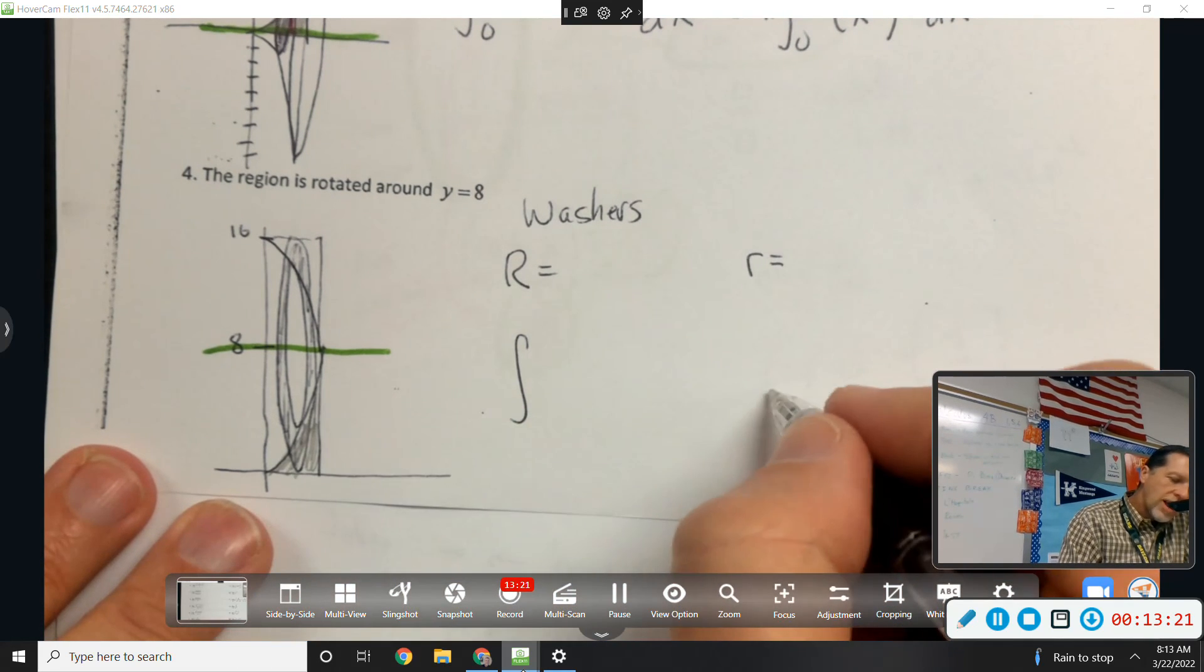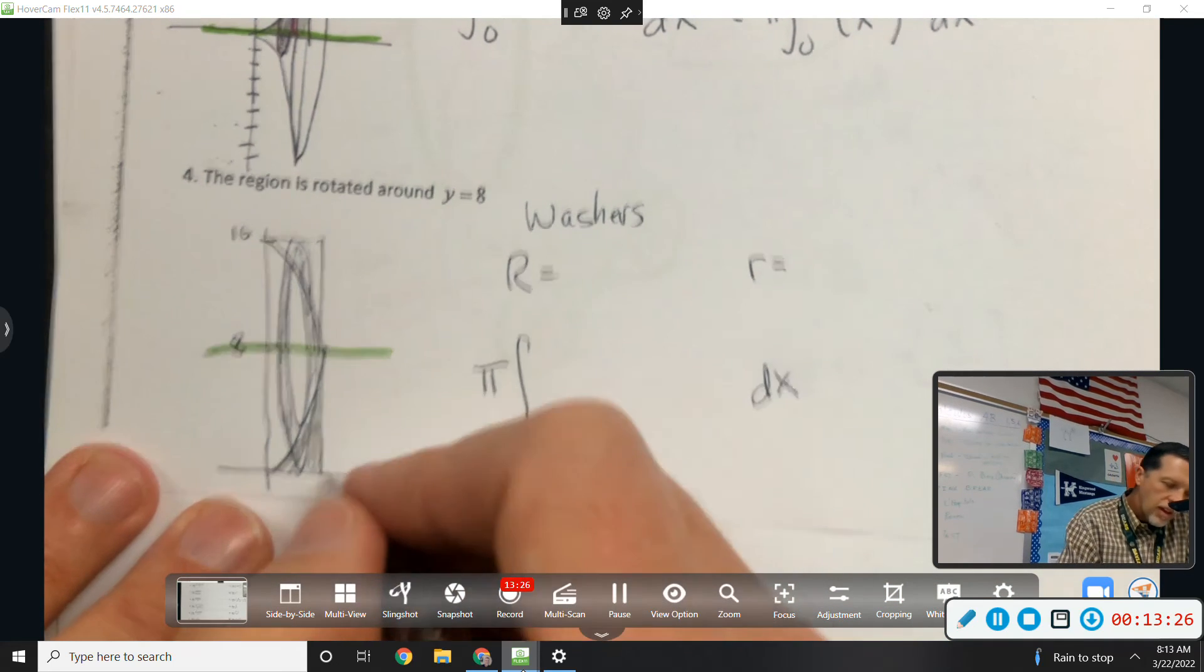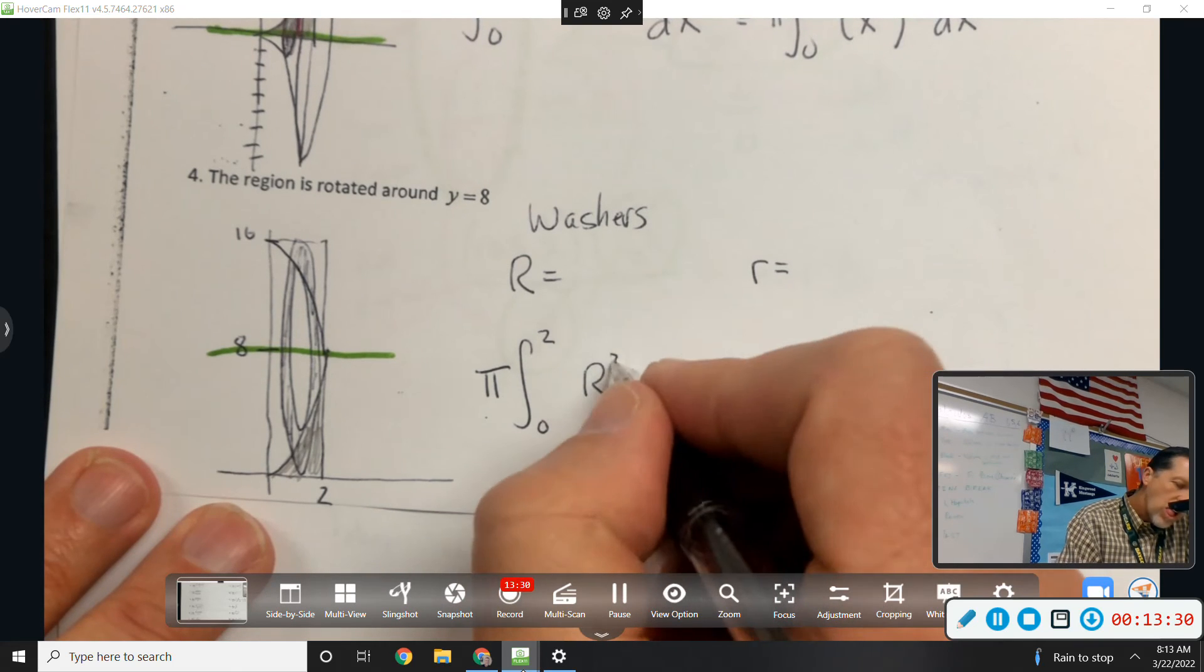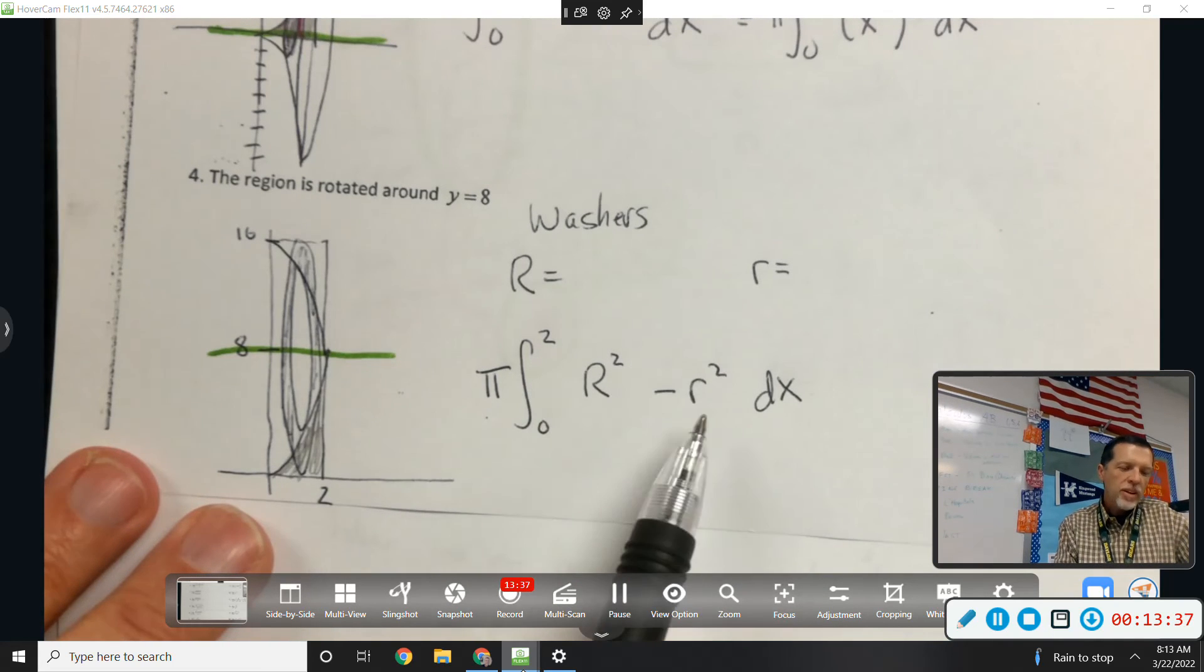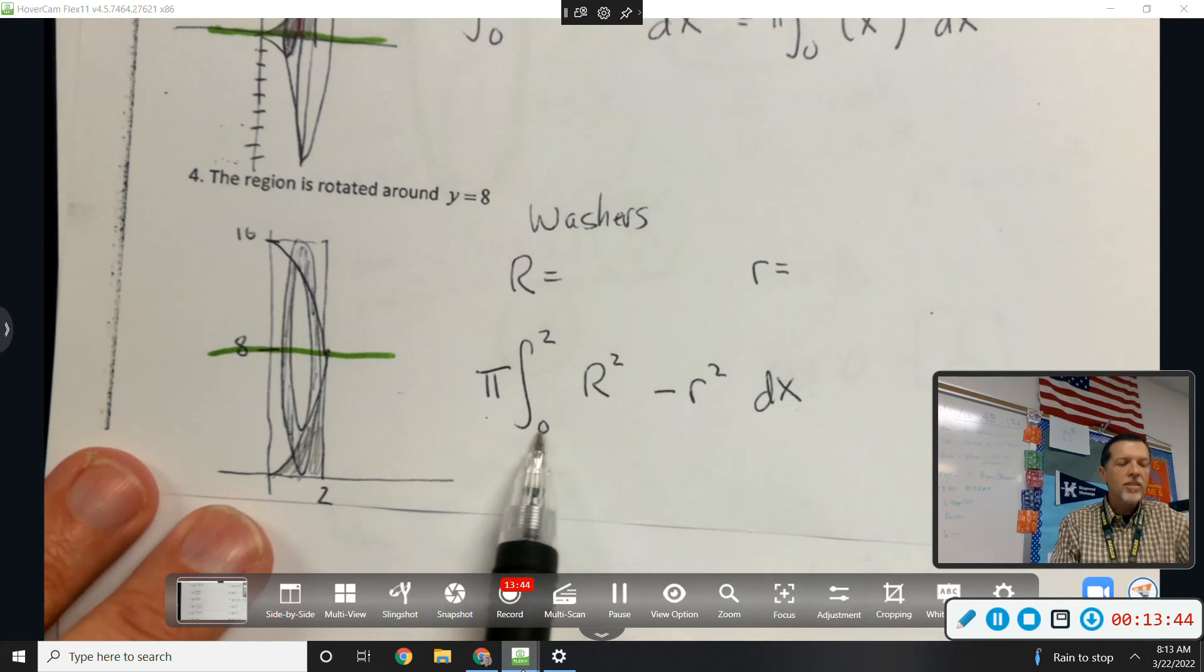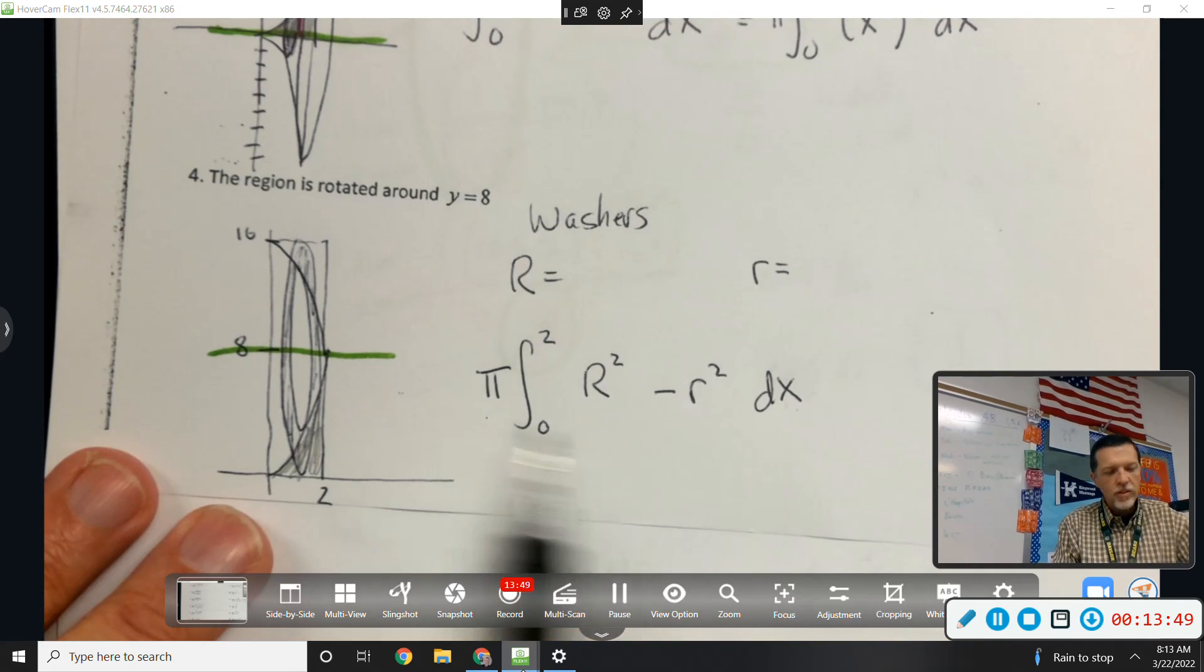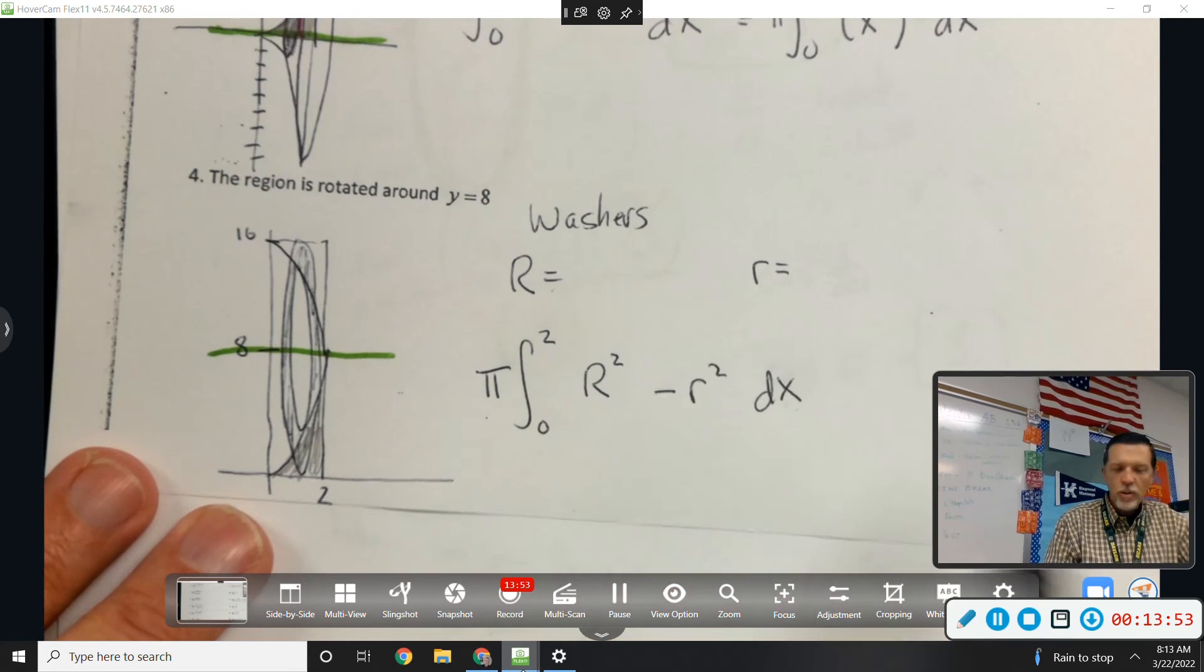They're still stacked up dx, still from 0 to 2. Big R squared minus little R squared. So I don't know if this is quite half the points yet, but I'm getting close. Even if I haven't identified big R and little R, because I've got the equation set. I know it's dx. I've got the limits right. So it's like a point for dx, a point for the limits, a point for the overall formula, a point for R, a point for little R, and then a point for the answer maybe.